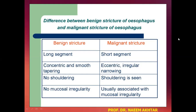On X-ray barium swallow, in benign stricture we may not see shouldering — there will be no shouldering — but shouldering is seen in case of malignant stricture. Similarly, in benign stricture there is no mucosal irregularity, but in malignant stricture it is usually associated with mucosal irregularity.